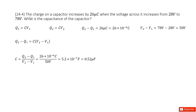We can write down that initially the charge equals the capacitance times the potential difference: q1 = C times V1. And for the final state, the charge equals the capacitance times the potential difference V2: q2 = C times V2.